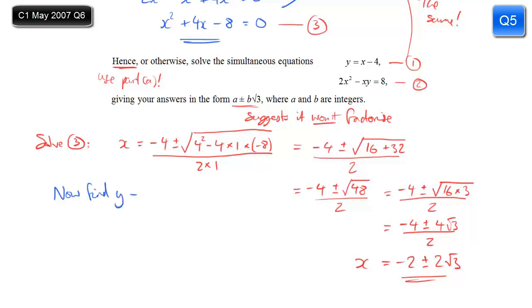So, I'm halfway to my solution. I've done the hard part. In fact, I've got the x values. I now need to find the y values. And I'm going to substitute in equation 1. You can substitute in equation 2 if you like, but it's just nasty. So we'll do it the easy way. So when x is minus 2 plus 2 root 3, y, which is x minus 4, will be that minus 4. So that becomes minus 6 plus 2 root 3.